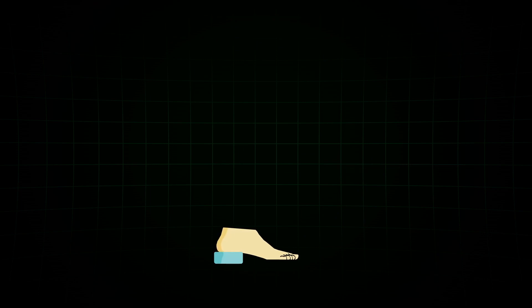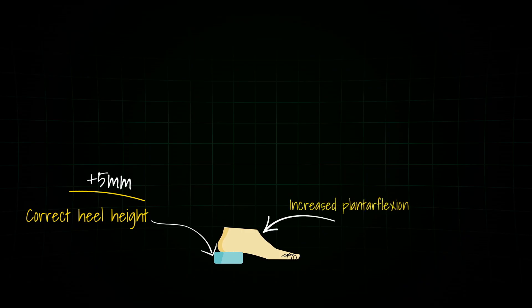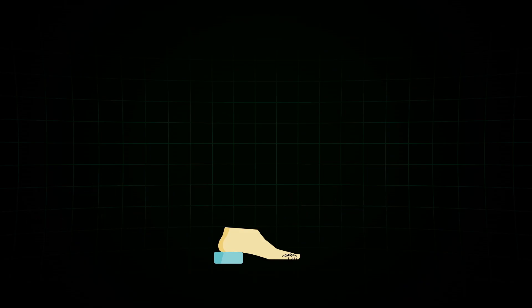We start from bottom to top. First step is to set the correct heel height. This is the heel height we measured earlier. Some manufacturers recommend to add an additional five millimeters to the heel height. Why? This increases the default plantar flexion of the foot and therefore increases the knee stability so that our highest priority, the user's safety, is absolutely guaranteed. Now we align the foot according to our rules.